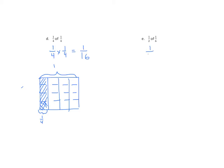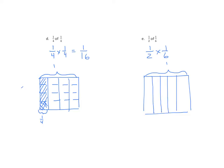One-half of one-sixth is one-half times one-sixth. We'll take our model, bracket the whole, and partition it into six equal parts. We have twelve as our denominator, and one of those is double-shaded, so the answer is one-twelfth.